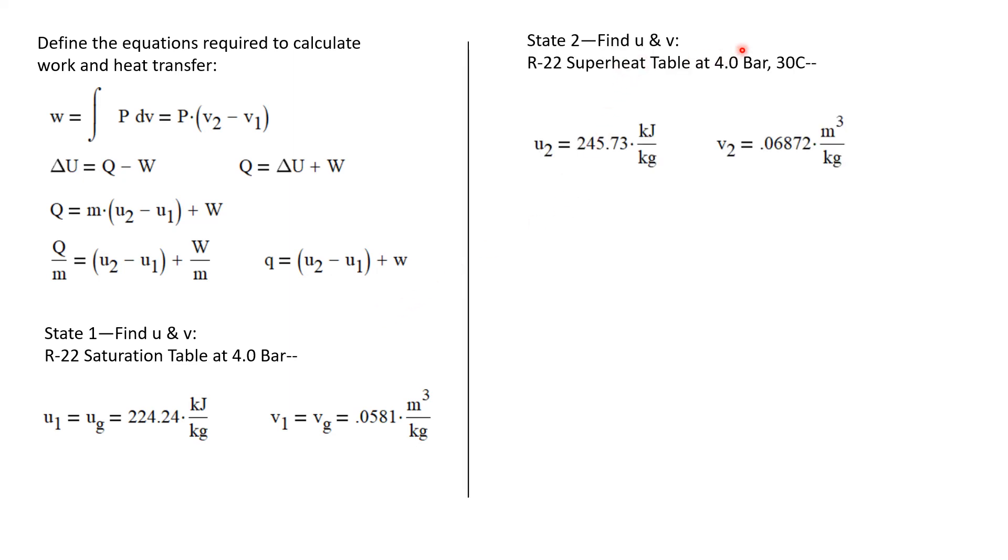Now let's find u and v values for state 2. We're going to find that in the superheat table for R-22. The two independent properties that define state 2 are that it has a pressure of 4 bar and a temperature of 30 degrees Celsius.